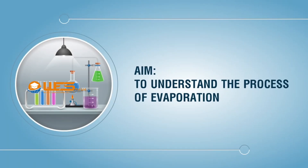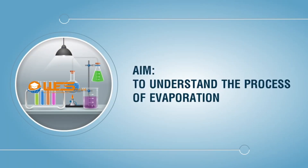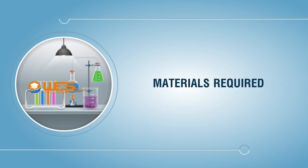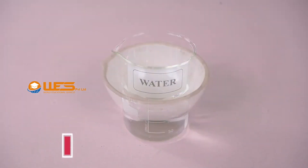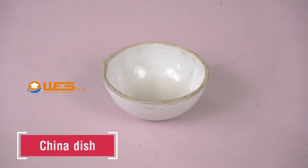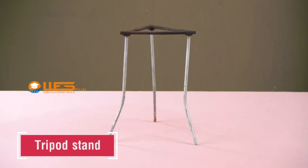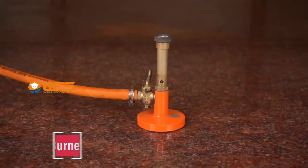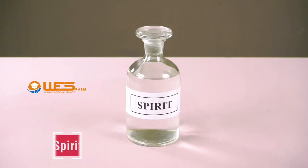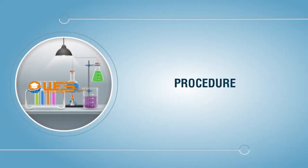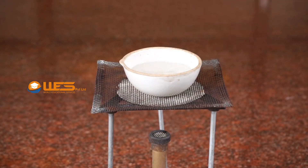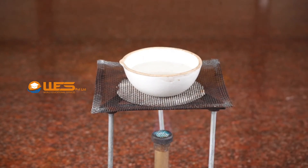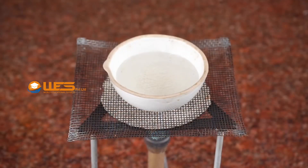Aim: to understand the process of evaporation. Materials required: water, china dish, tripod stand, spirit burner. Procedure: take about 50 ml tap water in a china dish. Heat the china dish slowly with the help of a burner.